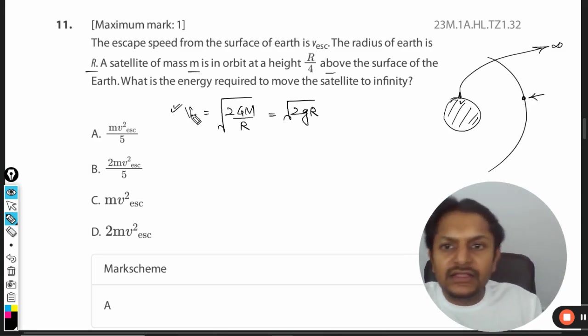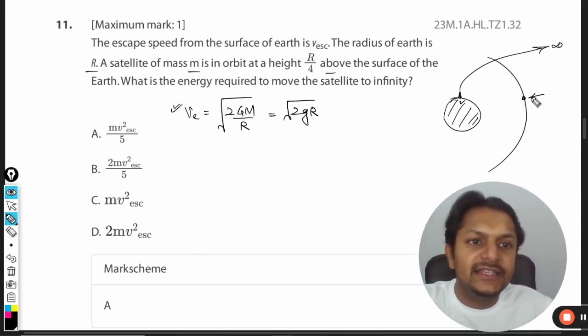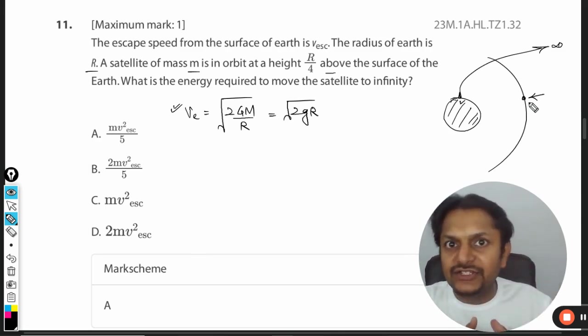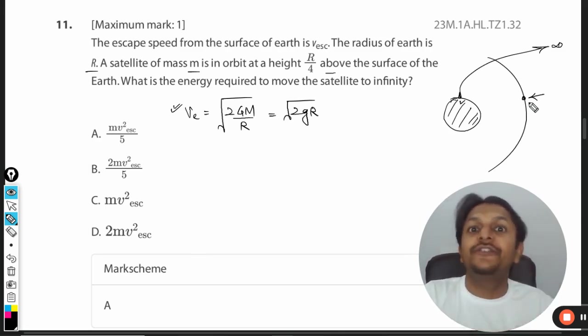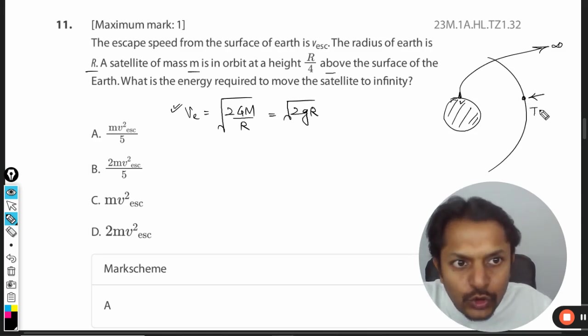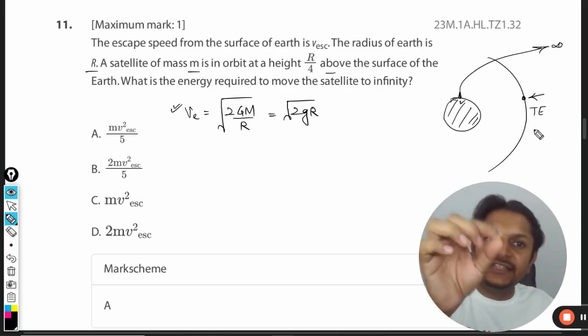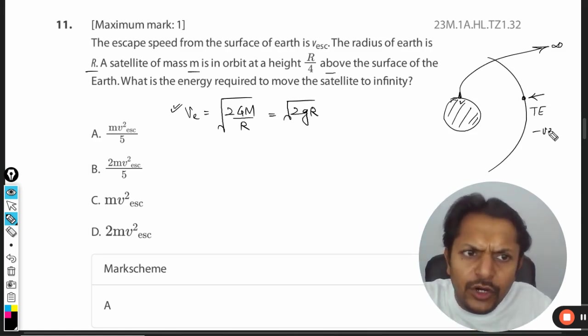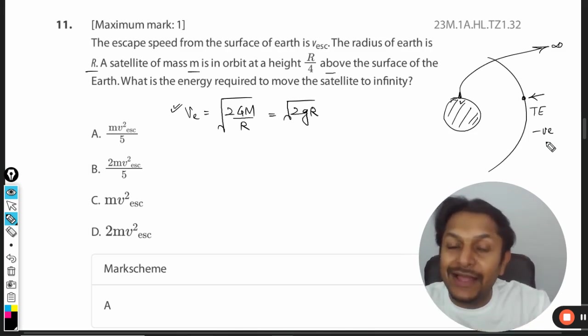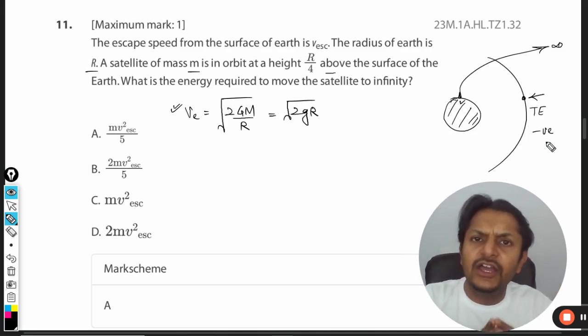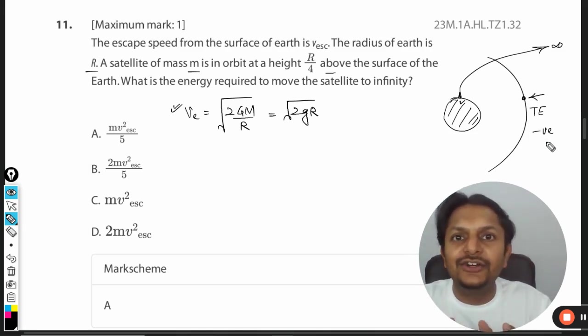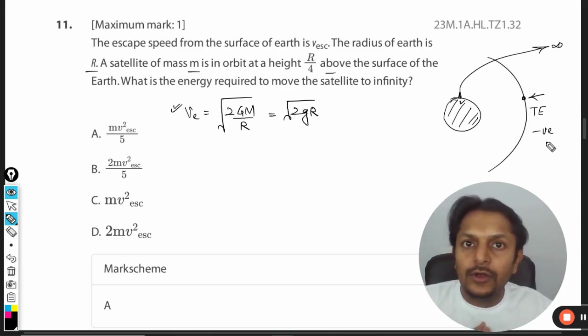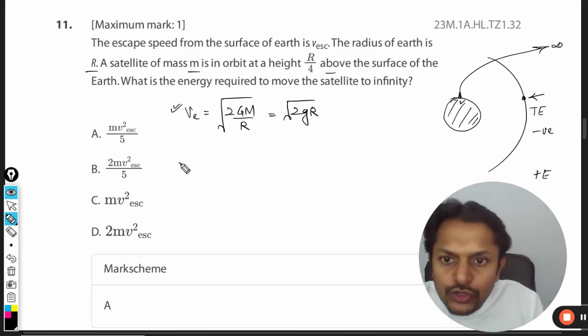The second concept: why will the body go to infinite distance? You find the total energy of the satellite at its current position. The total energy is negative because it's in a bound state—the satellite is bound to the planet. You have to provide energy so the total energy becomes zero. If you're providing additional energy E, your equation is: Total Energy + E = 0.